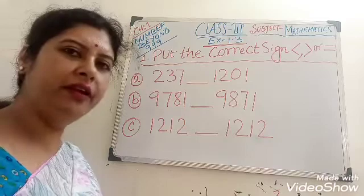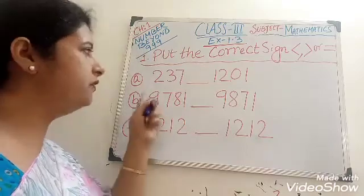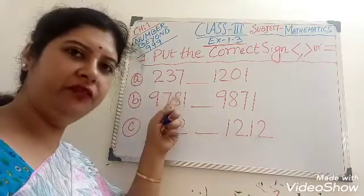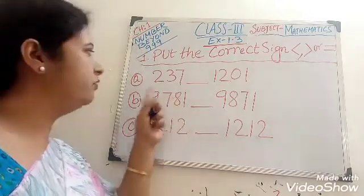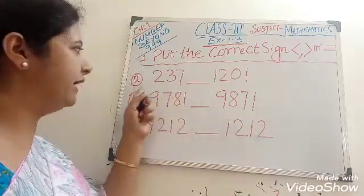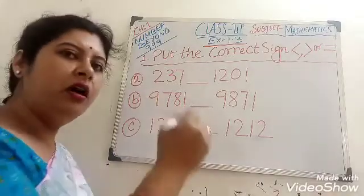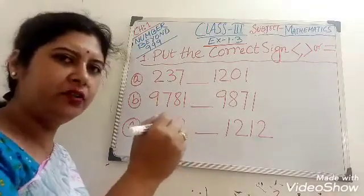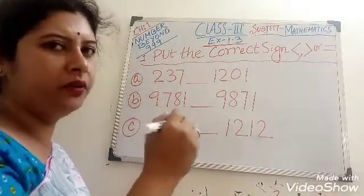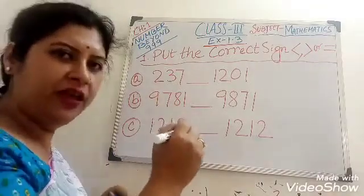Now children, observe the question carefully. First of all, we get the numbers. So our first work is to put the place value.